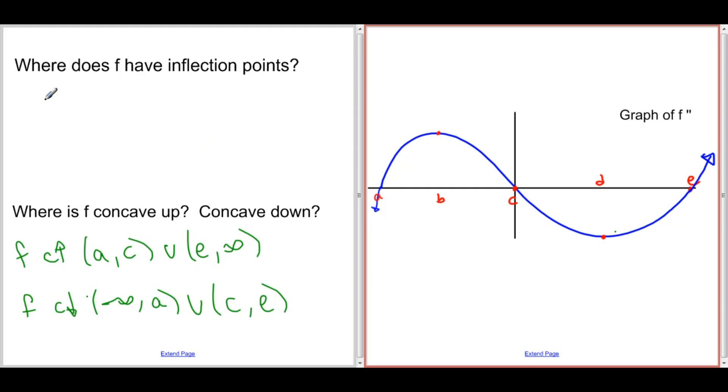So f has inflection points at x equals a, c, and e. And that is the most that we can do at this point with the graph of f double prime.